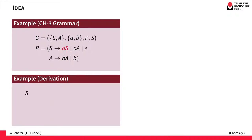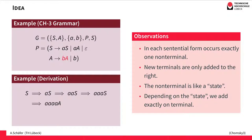We start with the start symbol S and we use a production rule replacing S by aS, then we apply the same rule again and again, and then we might take another rule and get another non-terminal. One thing we already see is that in each sentential form we have exactly one non-terminal, and this non-terminal is always the rightmost symbol.